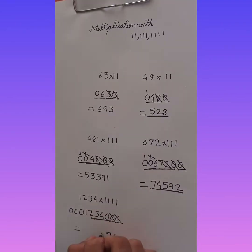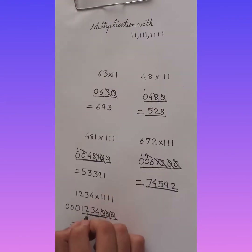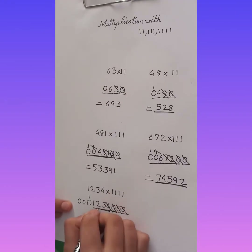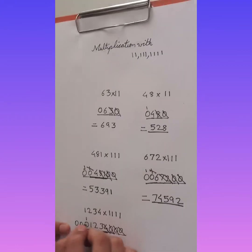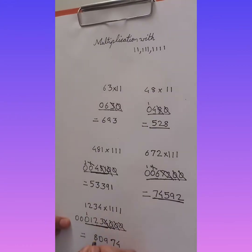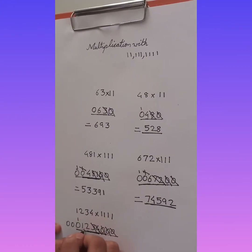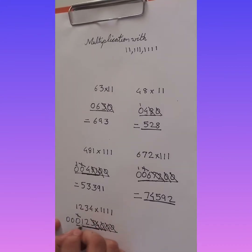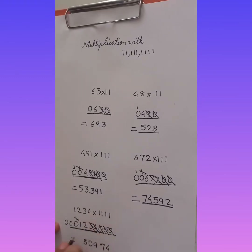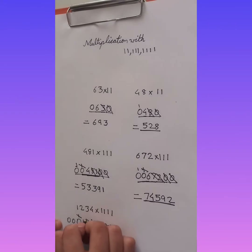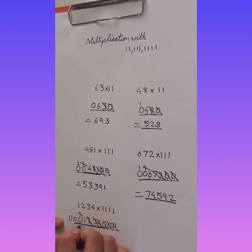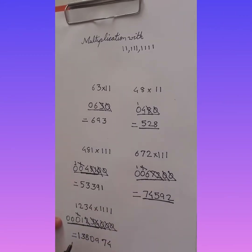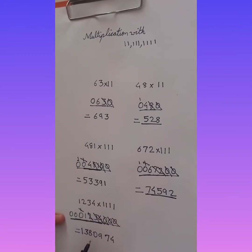Then 4 plus 3 is 7. Then 4 plus 3 plus 2 is 9. Then 1 plus 2 plus 3 plus 4 is 10 — carry 1, write 0. Then 3 plus 2 plus 1 carry is 6 plus more gives 8. Then 2 plus 1 is 3. Then 1 only. So our answer is 1,380,974.